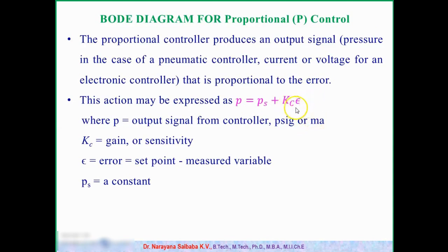The Kc value is an important parameter in the proportional controller. We can vary the Kc value from low values like 0 to high values. The Kc value determines the fastness of the response as well as the stability of the system, so it is always important to use the correct value of Kc for a stable system.